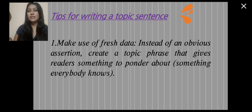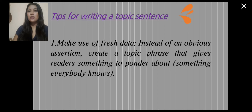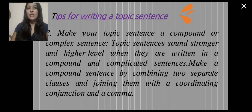Now we're talking about the types of topic sentences. The first type is the use of a phrase: state your topic in a way that gives readers something to think about — something that goes beyond what everyone already knows. The second type is a compound or complex sentence. Topic sentences sound stronger when written as compound or complex sentences. Form a compound sentence by combining two separate clauses joined with a coordinating conjunction and a comma.